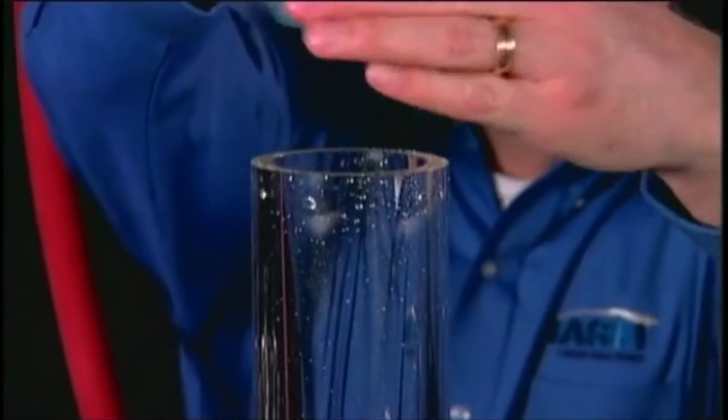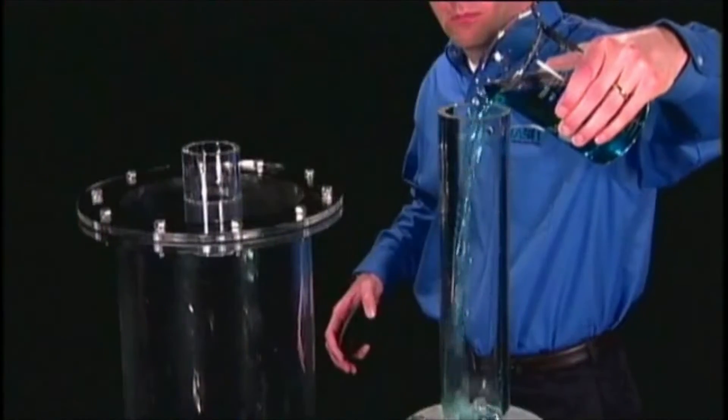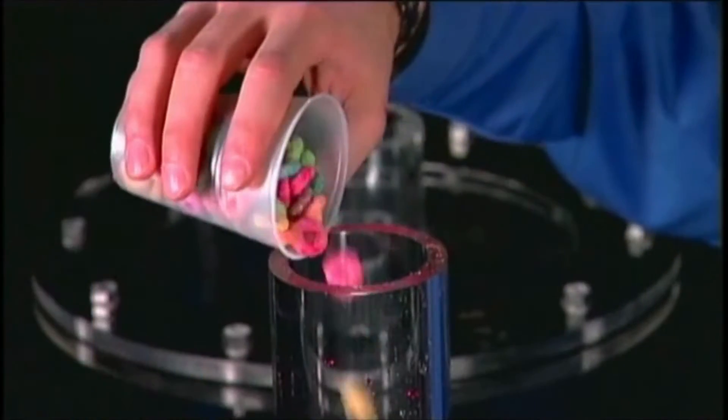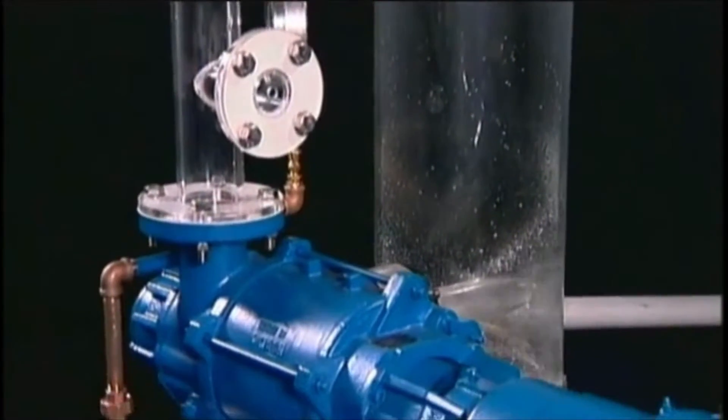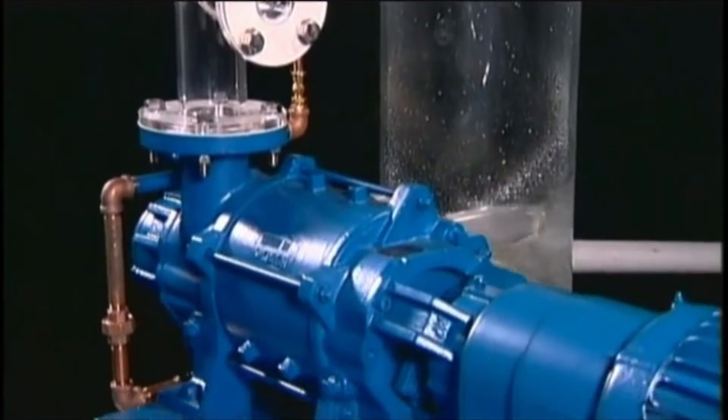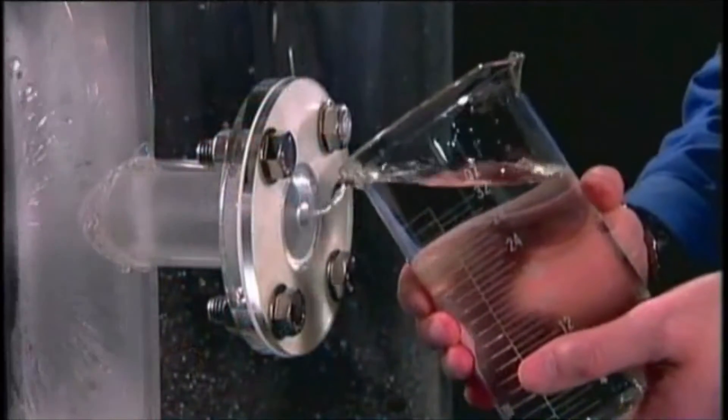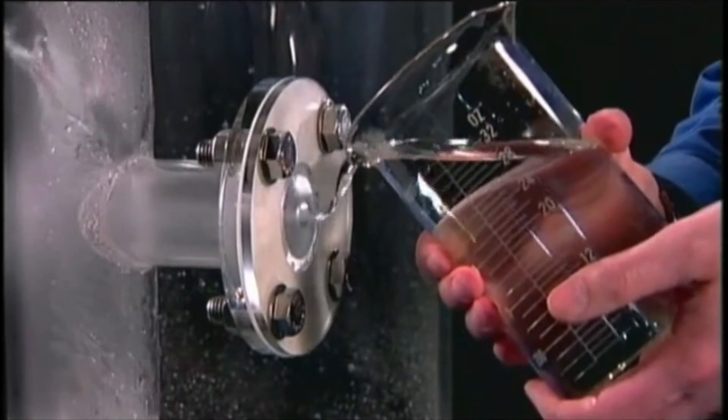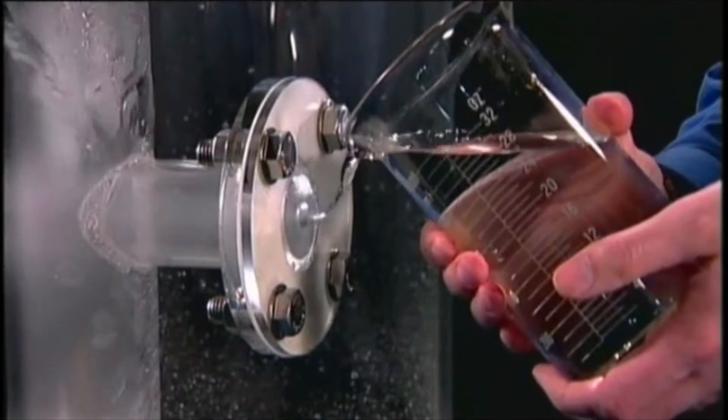With this inlet tube, we will valve in just about everything you get in a process system and a few things that you don't to show you that Nash pumps can handle them and keep on running. To simulate a load, we are using a restricted orifice at the inlet. We're pulling about 20 inches of vacuum.